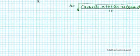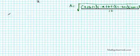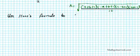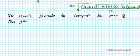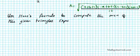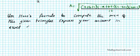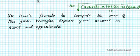So let's go ahead and try some examples. These are the instructions for the examples. We're going to use Heron's formula to compute the area of the given triangles. So express your answers in exact and approximate forms.